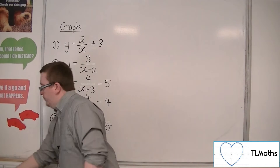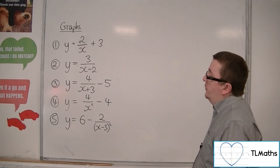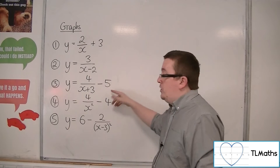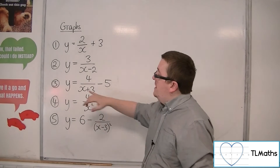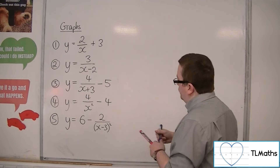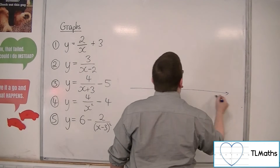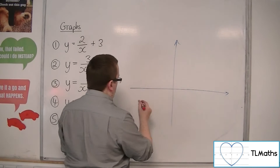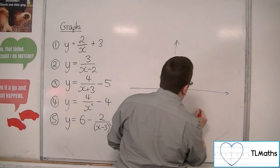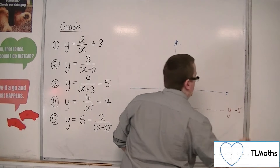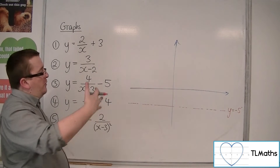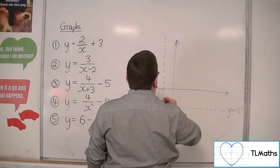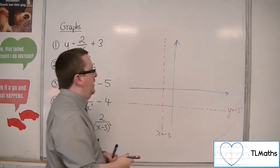Number 3: y equals 4 over x plus 3 minus 5. We now have both a translation in the y direction — moving down 5 — and x plus 3 means it's moving 3 steps to the left. So both asymptotes are moving: the minus 5 moves the horizontal asymptote down 5 units, and the x plus 3 moves the vertical asymptote 3 to the left.